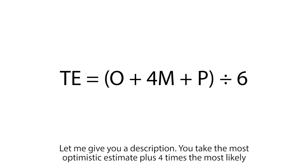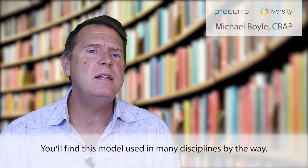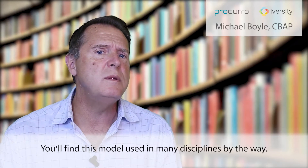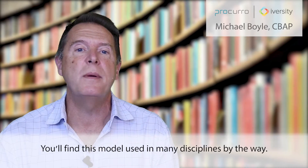The PERT formula is appearing on your screen right now. You take the most optimistic estimate, plus four times the most likely estimate, plus the most pessimistic estimate, and you divide the total by six. That's it. You'll find this model used in many disciplines.